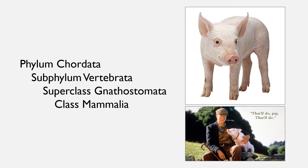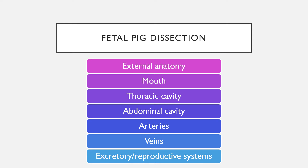As a reminder of the taxonomy: phylum Chordata, subphylum Vertebrata, superclass Gnathostomata — these are the jawed organisms — and then we're in class Mammalia. Today we'll go over external anatomy, the mouth, thoracic cavity, abdominal cavity, both arteries and veins, and then the excretory and reproductive systems.